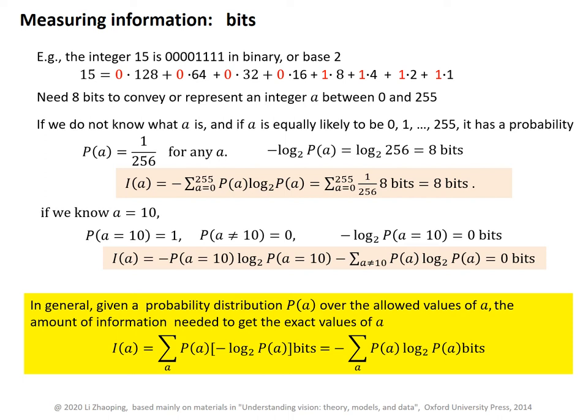This makes intuitive sense. In the first case, we started with no knowledge of A, and it requires 8 bits of information — 8 binary digits — to let us know what A is. In the second case, we have full knowledge of what A is; it is equal to 10. So, we need no more bits to know it more precisely.